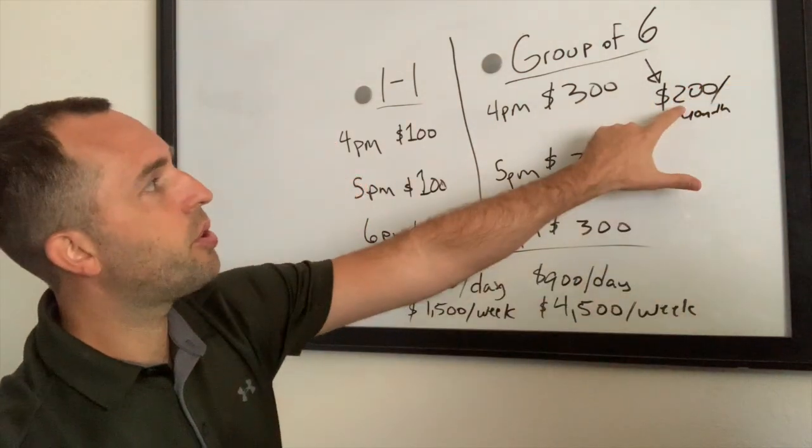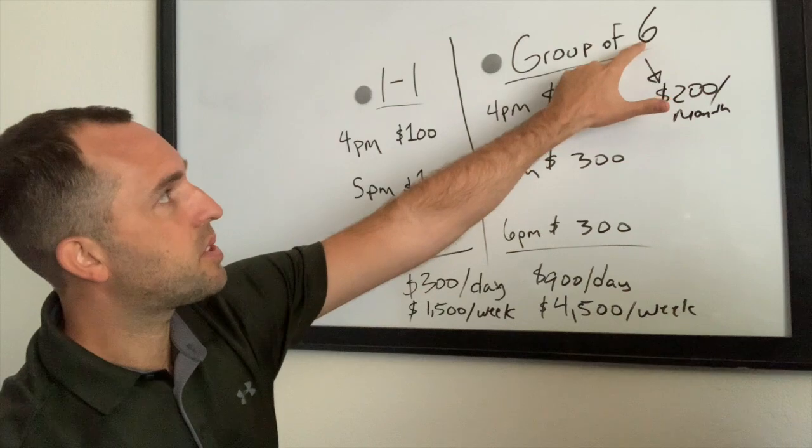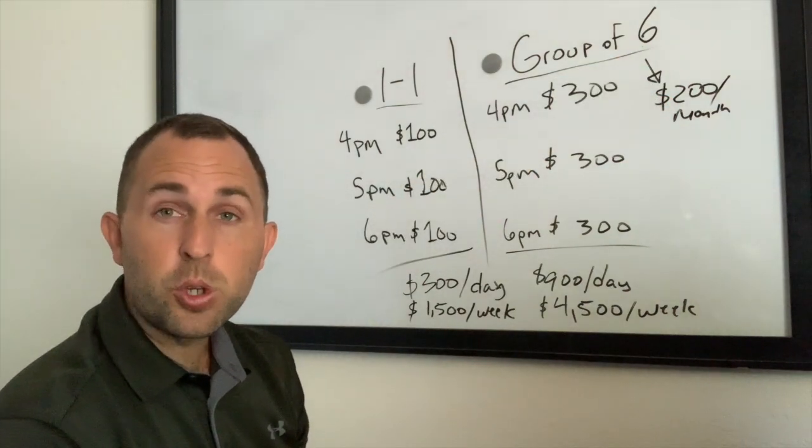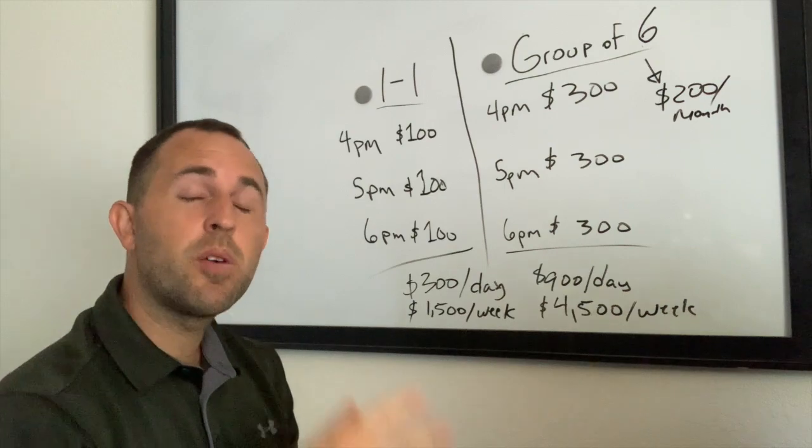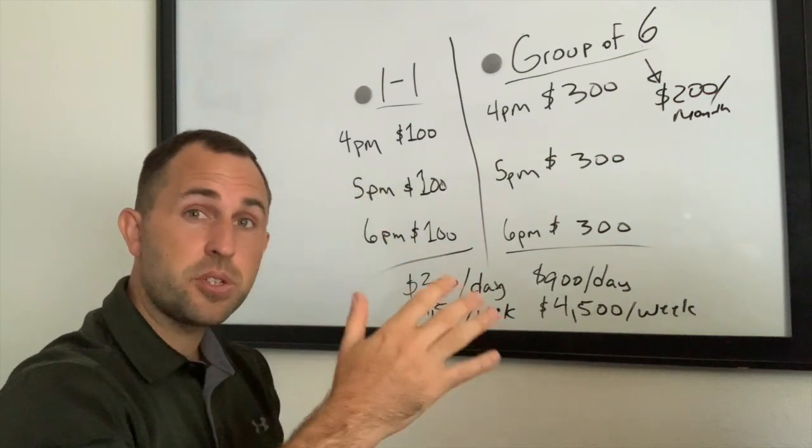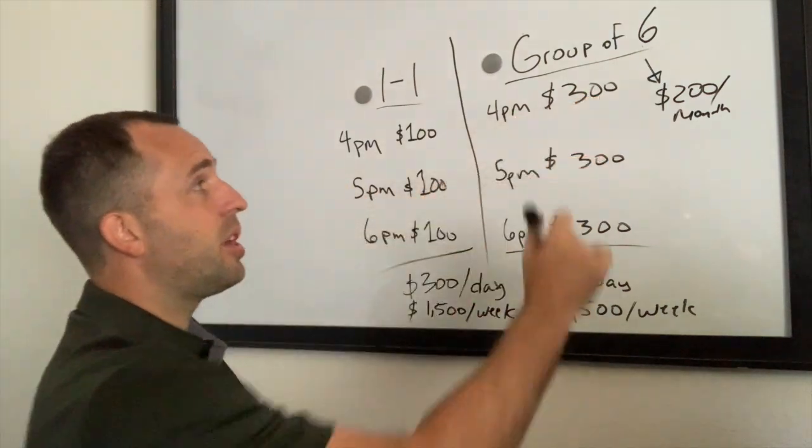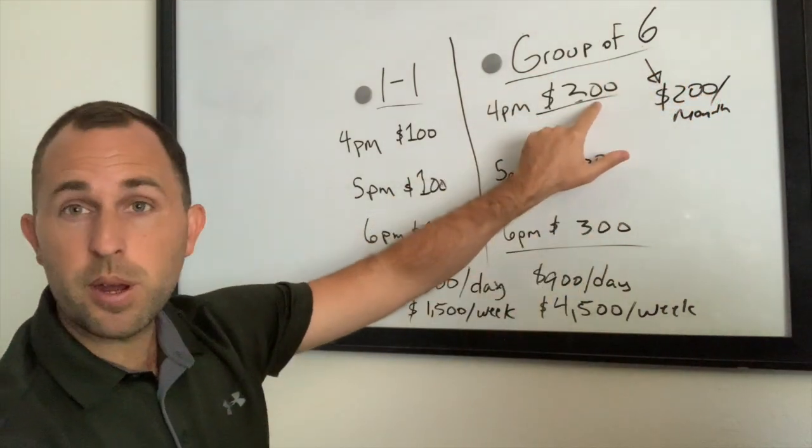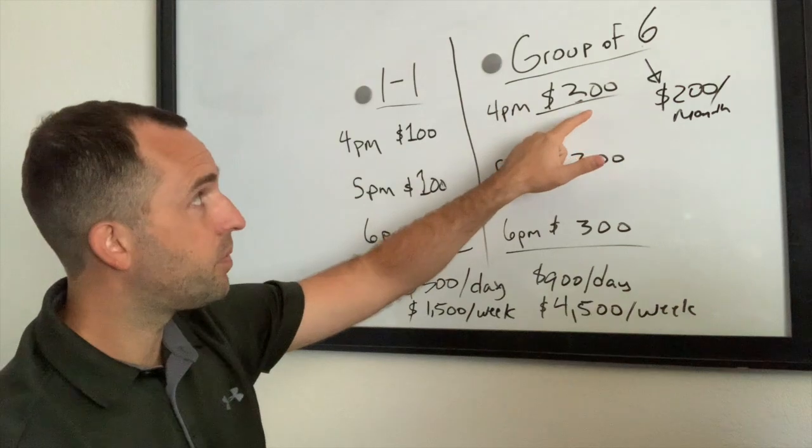So if we take $200 per month times six clients, that is $1,200 per group. If we take $1,200 divided by four sessions, that's $300 per hour. So with one group you make $300 per hour, one group of six with this model.